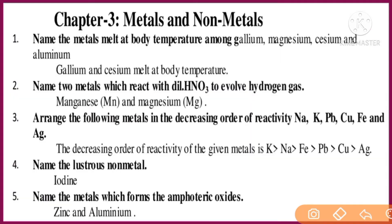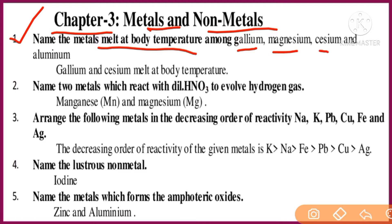Welcome to my YouTube channel Wiki Classes. Today we'll discuss Chapter 3: Metals and Non-Metals — the most important question answers and passing package. Question number one: Name the metals that melt at body temperature among gallium, magnesium, cesium, and aluminium. Gallium and cesium are the metals that melt at body temperature.